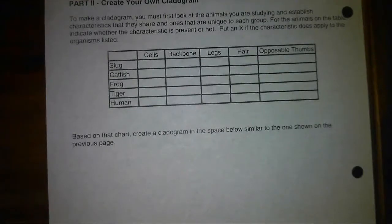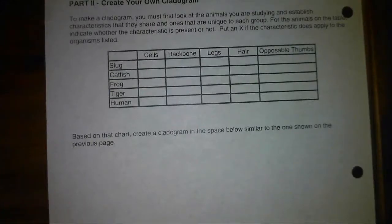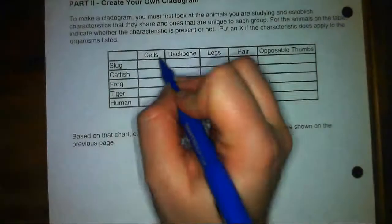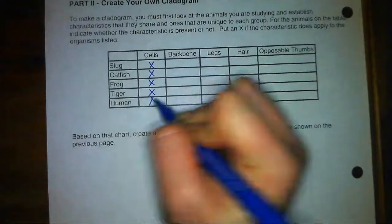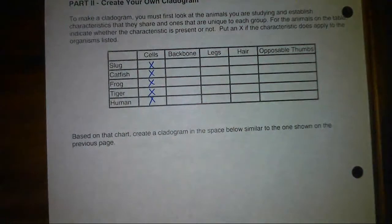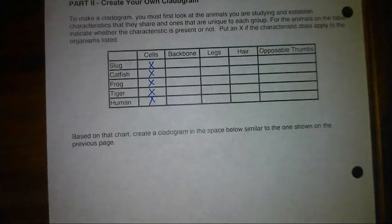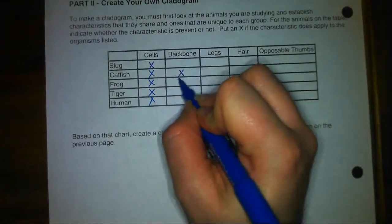Looking at the chart — this is a very simplified example — the organisms are a slug, catfish, frog, tiger, and human. Hopefully you're marking down that they all are made up of cells, so think about where that would be placed on your cladogram since it's a trait they all have in common. Then looking at backbone: catfish, frog, tiger, and human all have a backbone in common, but not the slug.